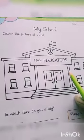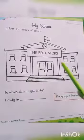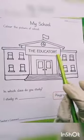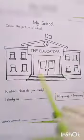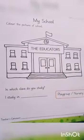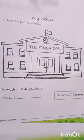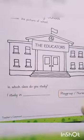Color the picture of the school. What you have to do is color this picture — the school is The Educators, so color the building of The Educators. Pick colors of your own choice and make it more and more beautiful with your colors.